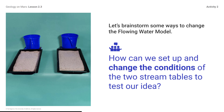How could we set up the two stream tables? Some options include propping up one stream table at 5 cm and another at 10 cm so we can compare the channels the flowing water forms. Or leaving one stream table completely flat and propping the other table up so we can compare the channels that form when the water flows over flatland versus a downhill slope.